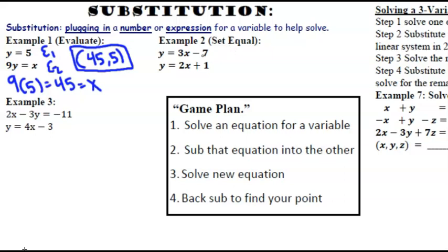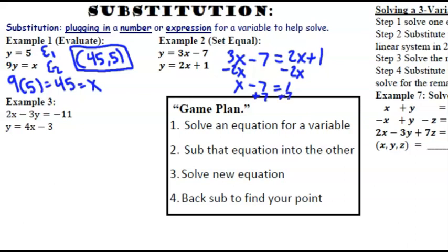Example 2: we're going to set them equal to each other. So it would be 3x minus 7 equals 2x plus 1. Solve for x — subtract 2x from each side — and then we have x minus 7 equals 1. Add 7 to each side and we get x equals 8. To find y, we'll substitute 8 wherever we see an x. We'll go ahead and do equation 2 since it looks a little bit easier. So 2 times 8 plus 1 — that's 16 plus 1 — that's 17. So your answer would be 8 comma 17, your solution point.